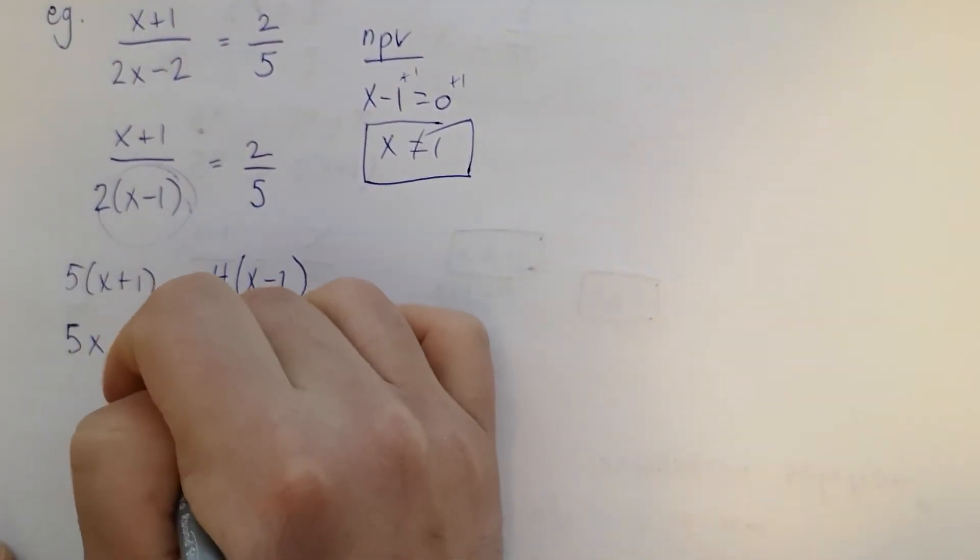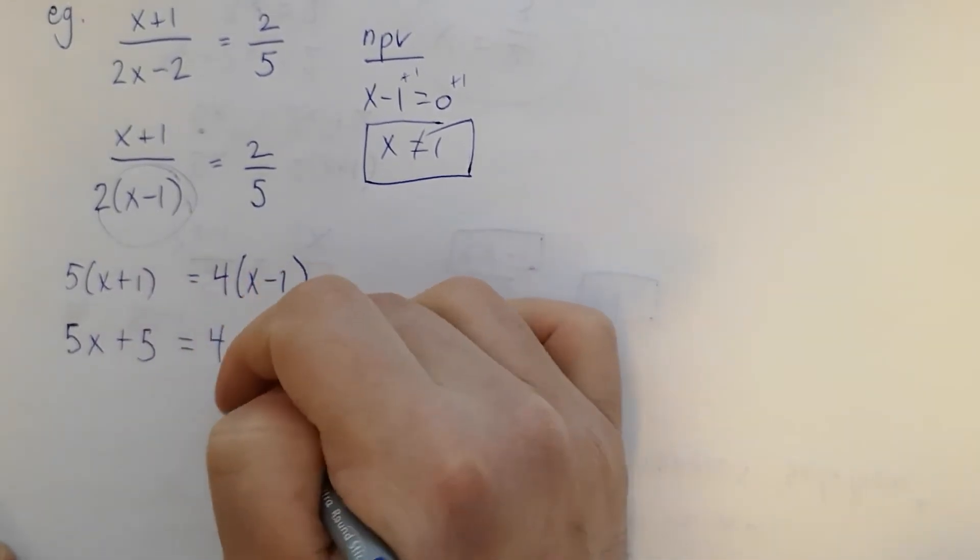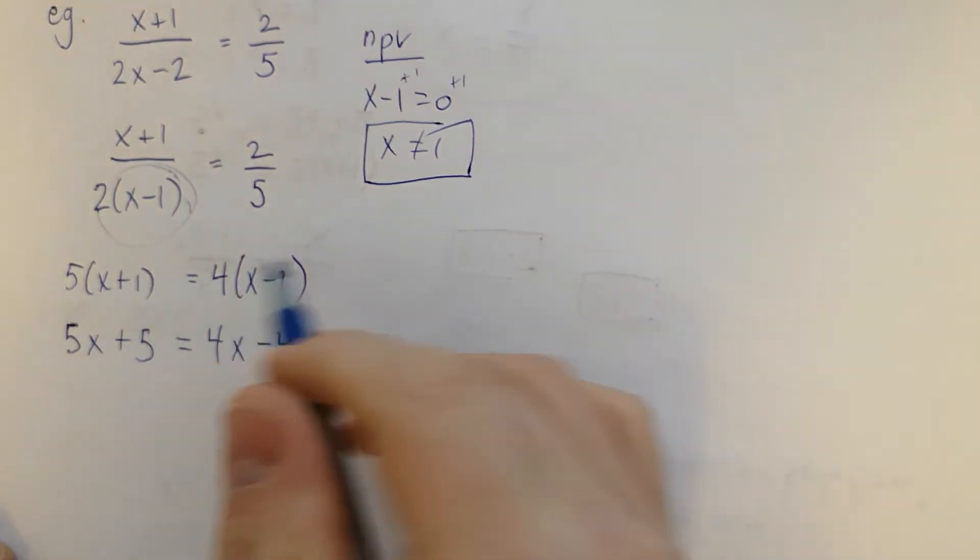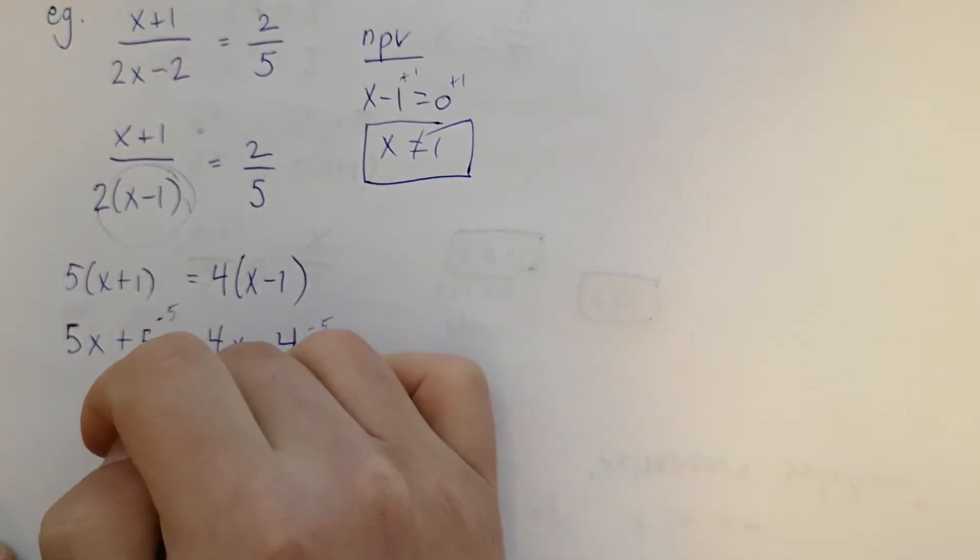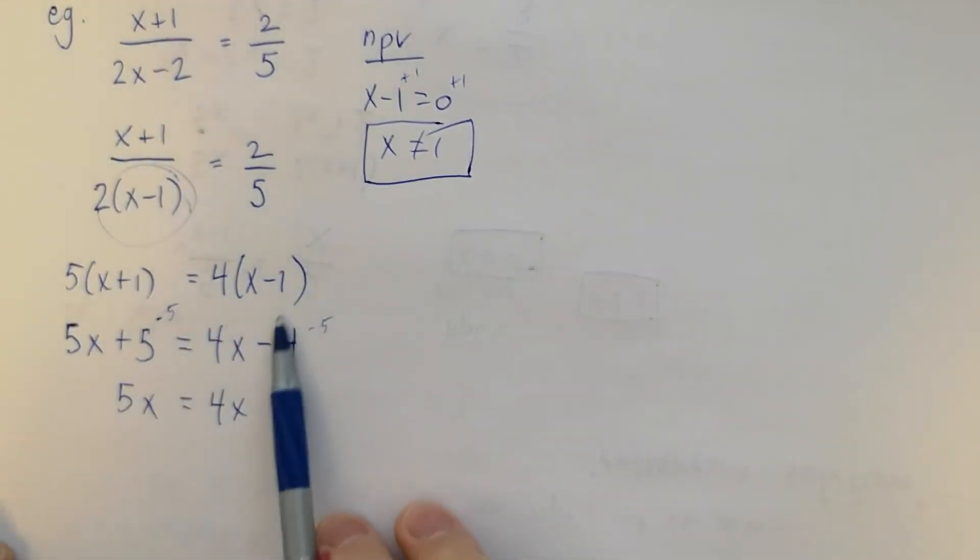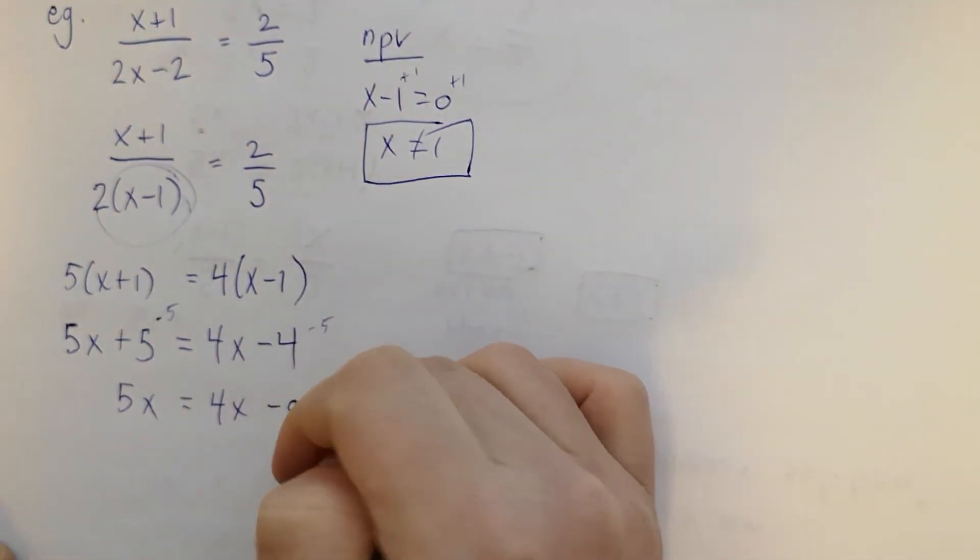Now I'm going to expand everything. Our answer is going to come pretty quickly here. I'm going to do things one step at a time. Let me get my five on the right. So if I have a negative four minus five, it's going to be negative nine.